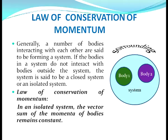Let us first discuss conservation of momentum. It has been experimentally shown that if two bodies interact, the vector sum of their momenta remains unchanged, provided the force of mutual interaction is the only force acting on them. The same has been found to be true for more than two bodies interacting with each other. Generally, a number of bodies interacting with each other are said to be forming a system. If the bodies in a system do not interact with bodies outside the system, the system is said to be a closed system or an isolated system.